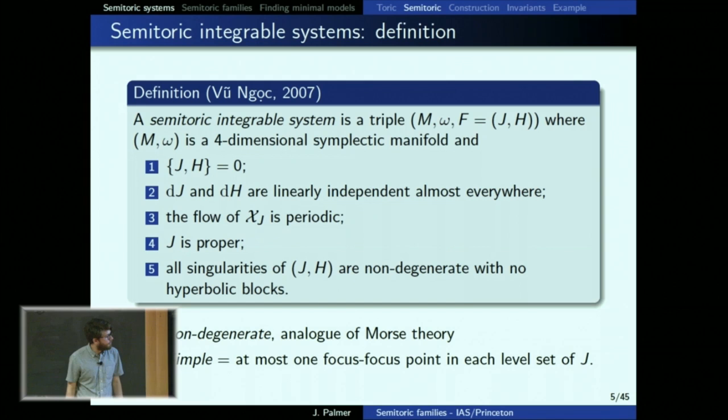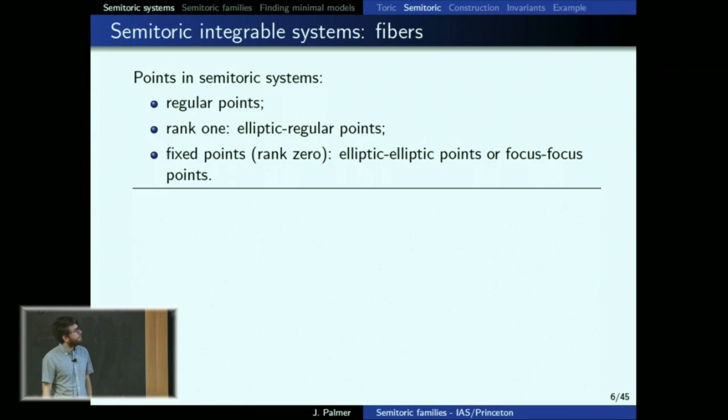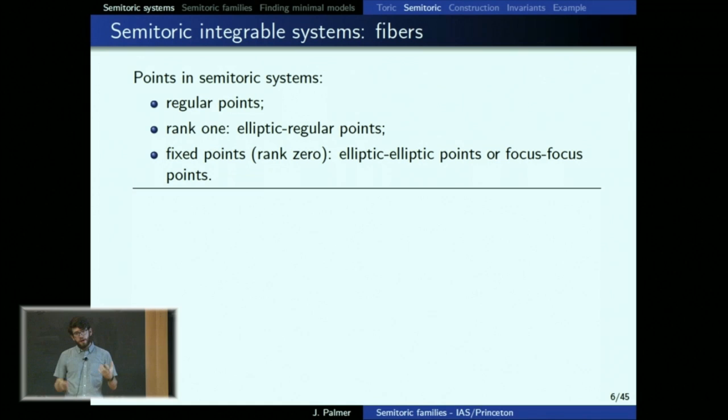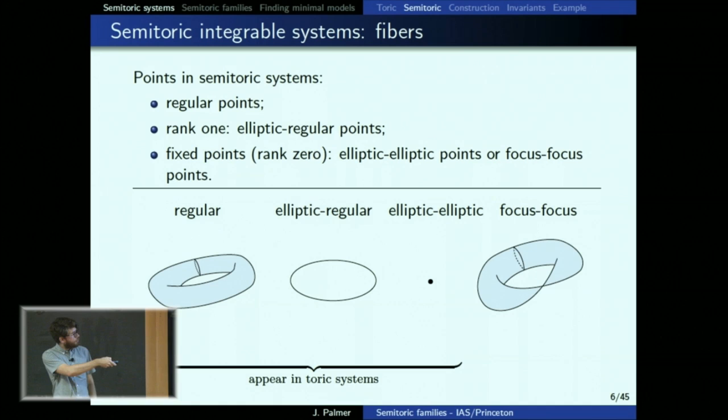In order for the classification to work, we require that there aren't too many of these things in the same fiber of the Hamiltonian for the S^1 action. In a semi-toric system, you have regular points where the fiber is a torus, rank-1 points which must be elliptic-regular so the fiber is a circle, and two types of fixed points: elliptic-elliptic points where the fiber is just a point, and focus-focus points where you have a torus that has degenerated.